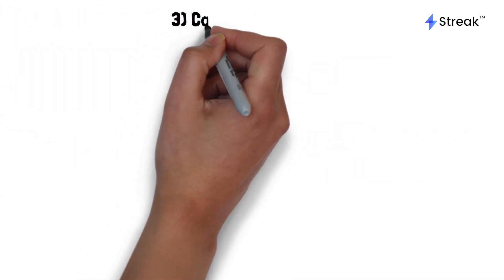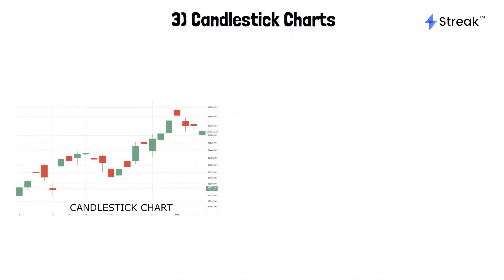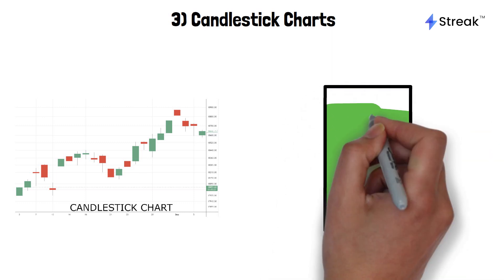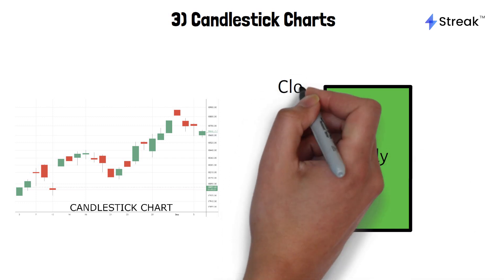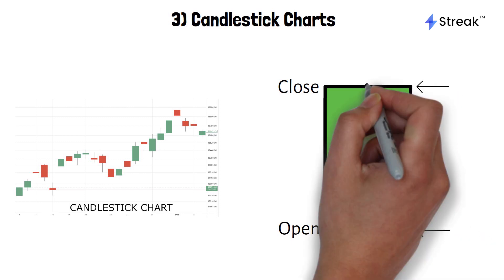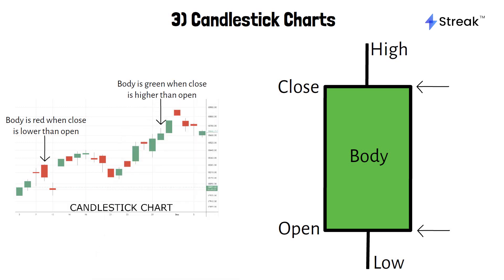The third and most popularly used charts are candlestick charts. Candlestick charts are similar to bar charts, but they use a series of lines and rectangles to represent the data. The rectangular part is called the body of the candlestick. The open and close prices are represented by the top and bottom of the body, and the high and low prices are represented by horizontal lines on the top and bottom of the body. Candlestick charts are very popular among traders because they can reveal patterns and trends that may not be immediately obvious on other types of charts.